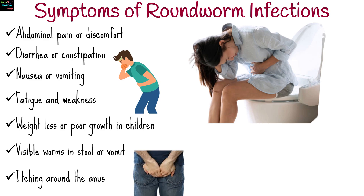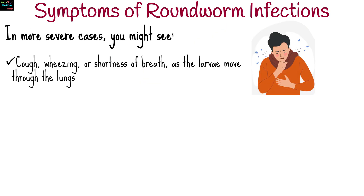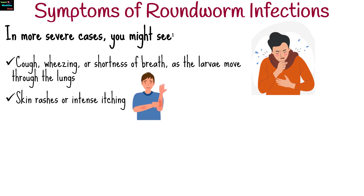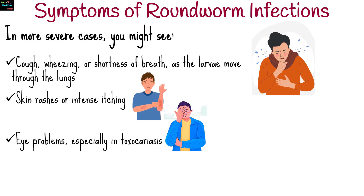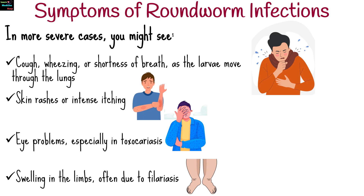In more severe cases, you might see cough, wheezing, or shortness of breath as the larvae move through the lungs. Skin rashes or intense itching. Eye problems, especially in Toxocariasis, and swelling in the limbs, often due to filariasis.